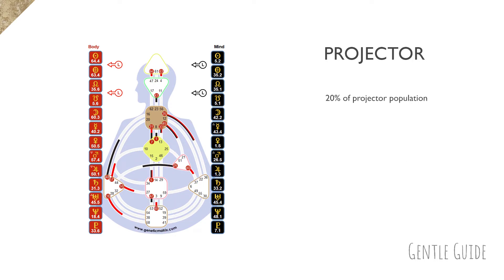There is approximately 20% of projectors in the world. Given that rules were written by manifestors, 70% of the world population are generators, leaves us with the type which is most conditioned of all. And that is why I find it so important that we empower projectors, understand and support them as much as we can.